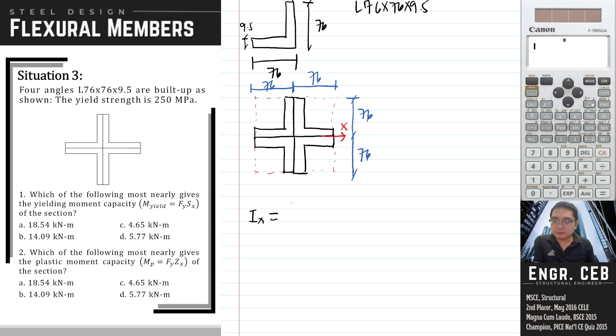Moment of inertia is 1 over 12. We have two sides of 76 millimeters, so that is 2 times 76, so we have 152 mm. So bh cubed.